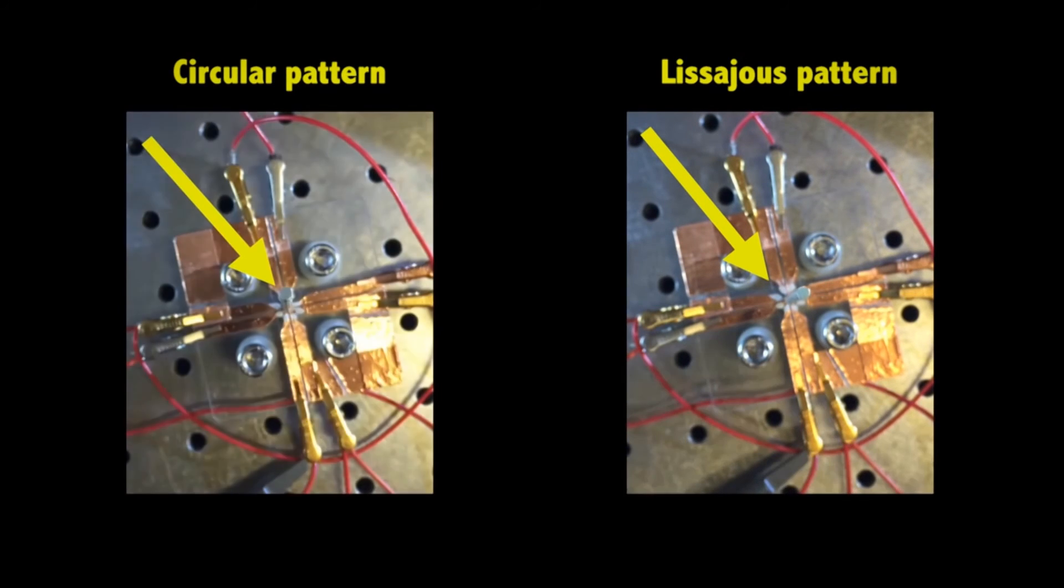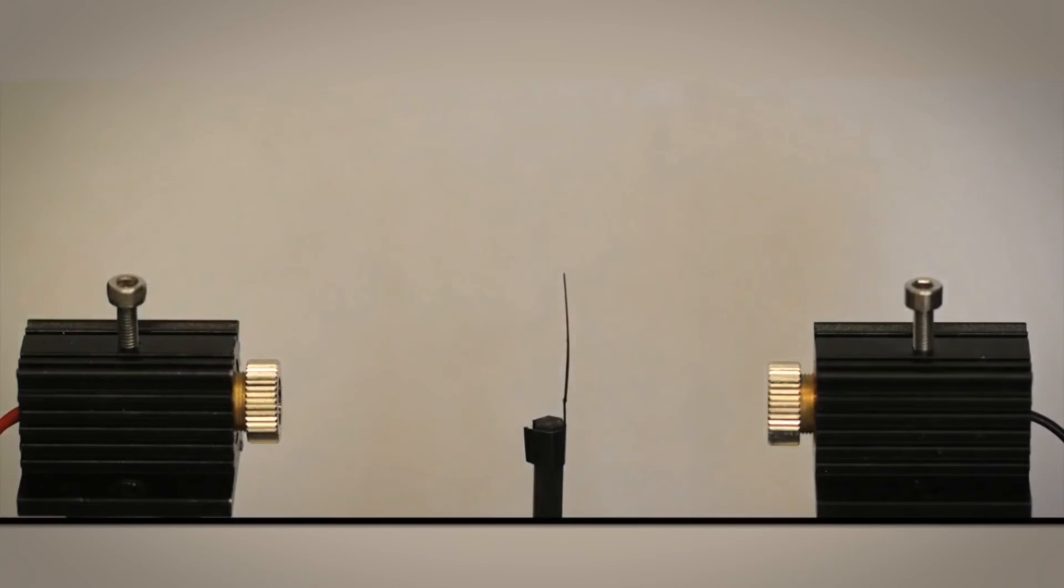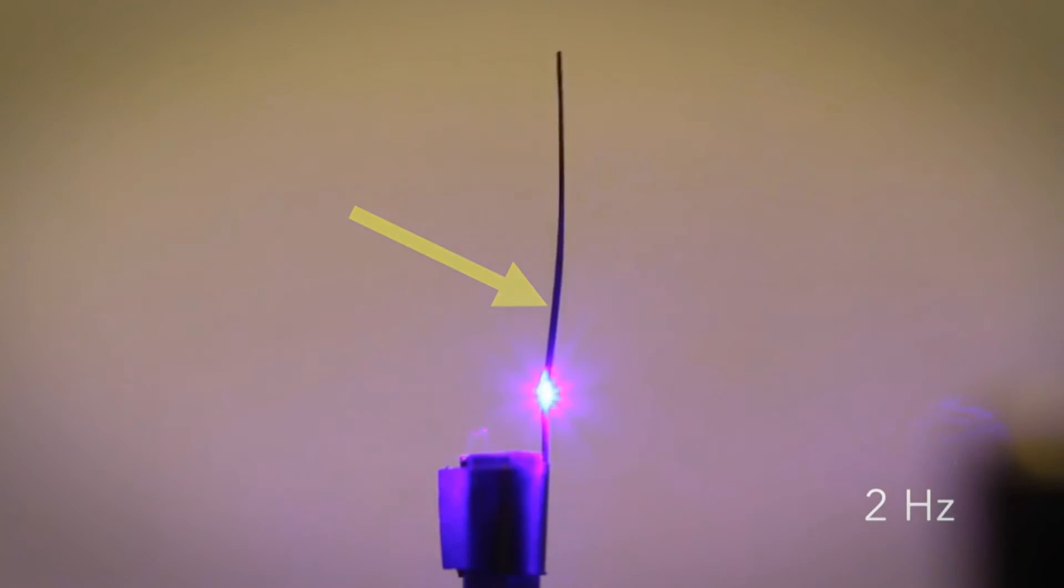It also maintains its performance after at least 100,000 bending cycles and can bend and retract at least 17 times per second. The technique could lead to robots that can bend and grip more easily and therefore accomplish more complicated tasks.